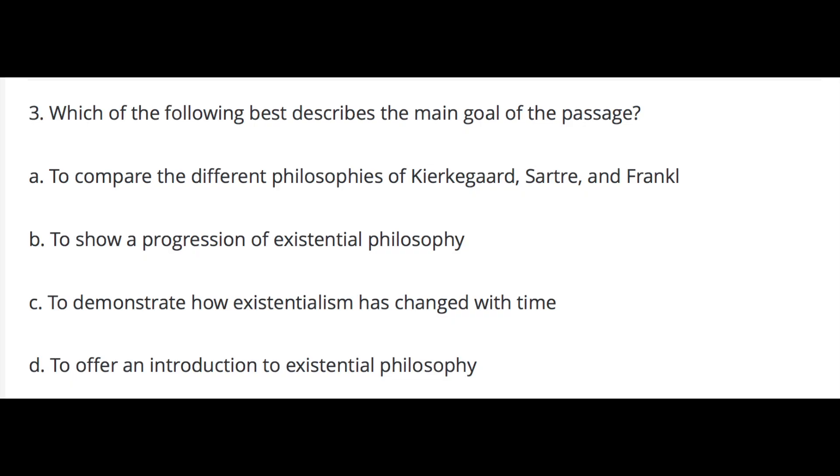Question three — which of the following describes the main goal of the passage? — the correct answer is B: to show a progression of existential philosophy. This is another comprehension question directly asking for the main goal of the passage — in other words, what is it about? In paragraph three, there is a direct progression from Kierkegaard to Sartre, and an implied one in the last paragraph as the author introduces Frankl as having applied existentialist principles, presumably introduced by Kierkegaard and Sartre.